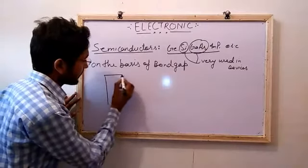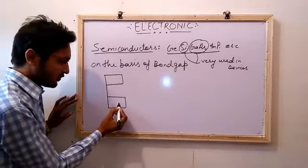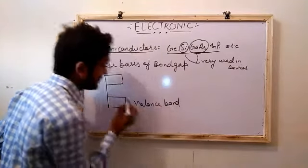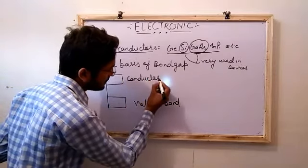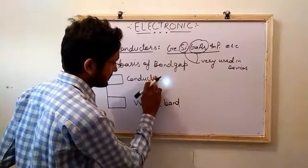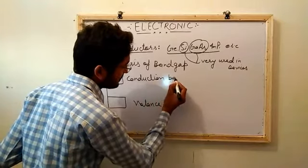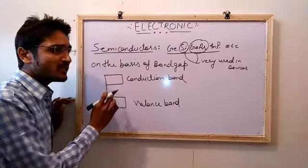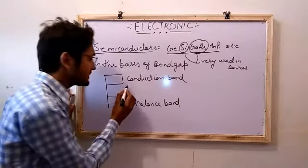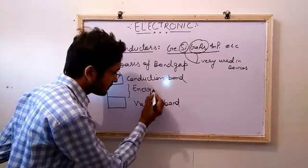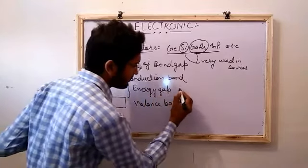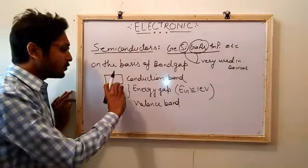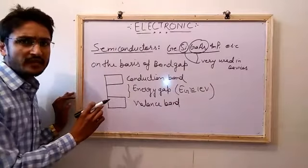We can see here — there are two bands. The first is known as the valence band, and the second is known as the conduction band. The gap between them is known as the energy gap. When this energy gap is nearly one electron volt, those types of materials are known as semiconductors.